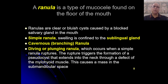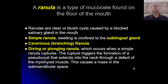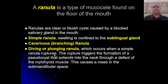There are mainly three types. One is simple ranula, which is present at the floor of the mouth and is confined to the sublingual gland. Then there is cavernous or branching type of ranula, which has pseudopodia — finger-like projections — and these ramifications are in different planes of the soft tissues of the face. Then there is diving or plunging ranula, which occurs when a simple ranula ruptures and this rupture triggers the formation of a pseudocyst that extends into the neck through a defect of the mylohyoid muscle, causing a mass in the submandibular space.